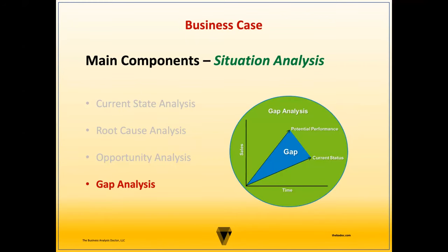Next is the cost-benefit analysis of the recommendation. As you can see here, we have our payback period table over five years. Some of the things we're looking at are operational costs and development costs. It will be a good idea to leverage the expertise of the IT professionals or IT management to get a semi-realistic understanding of what those development costs would be. You also want to look at tangible costs as well as intangible costs, and you'll want to collaborate with your financial analyst to come up with some of these figures.